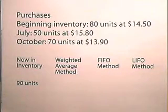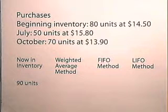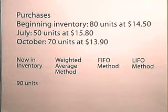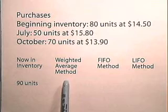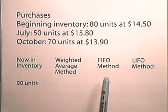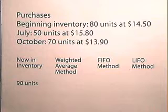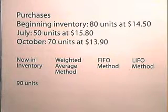Now let's look at an example in which we are going to determine inventory. The beginning inventory is 80 units at $14.50. In July, 50 units were purchased at $15.80. In October, 70 units were purchased at $13.90. And now in inventory, they have 90 units. We're going to use the weighted average method, the FIFO method, and the LIFO method to determine inventory, and we will define each of these methods as we go.